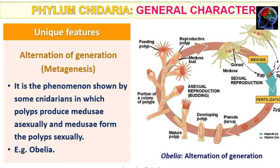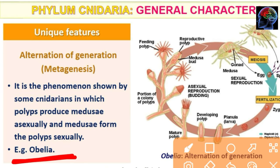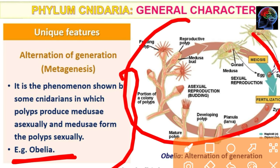This Alternation of Generation is important. We see alternation between sexual and asexual forms — polyp and medusa stages alternating with each other.